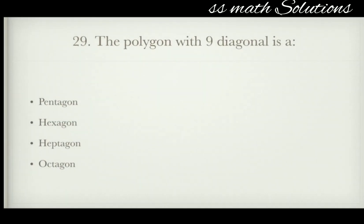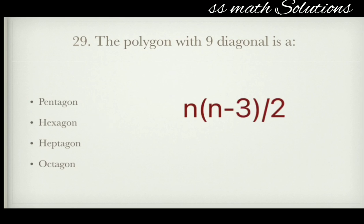The polygon with 9 diagonals is a — pentagon, hexagon, heptagon, or octagon? We use the formula n(n−3)/2 to find the number of diagonals. For a hexagon with 6 vertices: 6×(6−3)/2 = 9. So the answer is hexagon. For reference: pentagon has 5, heptagon has 14, and octagon has 20 diagonals.